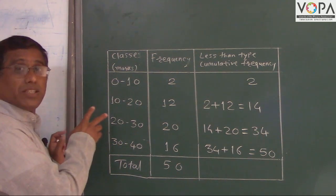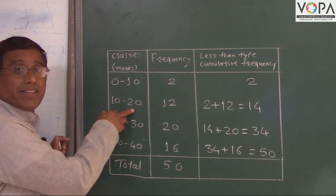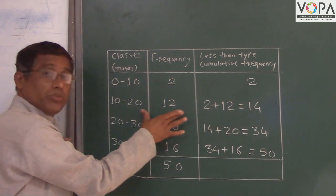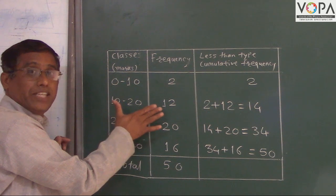How many students got less than 20 marks? 2 plus 12 means 14. So 14 students got less than 20 marks.